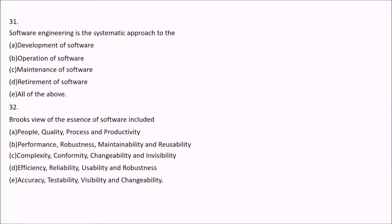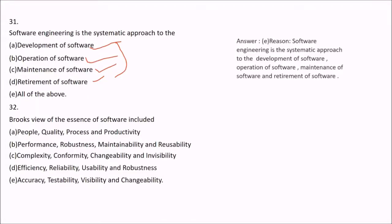Question 31: Software engineering is the systematic approach to the development, operation, maintenance, and retirement of software. Again, all these are true, so all of the above is the answer — E.